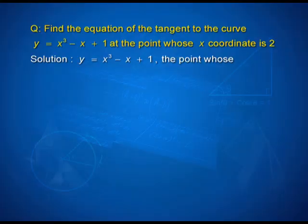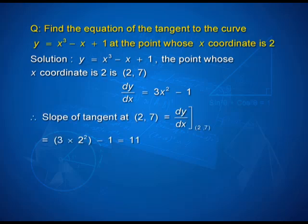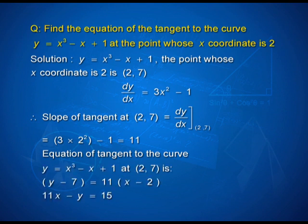Here is a simple question to begin with: find the equation of the tangent to the curve y = x³ − x + 1 at the point whose x coordinate is 2. To begin with, you must know the point at which the tangent is to be constructed, that is (x₁, y₁). Since it is a point on the curve, when x = 2, y can be calculated by substituting x = 2 into the function. dy/dx = 3x² − 1, so the slope of the tangent at (2, 7) is the value of dy/dx at (2, 7), which gives 11. Therefore, the equation of the tangent using the point-slope form is y − 7 = 11(x − 2). Simplify and express as a linear equation in standard form ax + by = c.